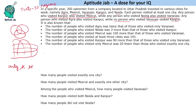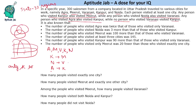Let us write the cities and conditions using initials: A (Agra), M (Meerut), V (Varanasi), K (Kanpur), N (Noida). The conditions are: visiting Kanpur requires visiting Meerut; visiting Noida requires visiting Varanasi; visiting Agra requires visiting Kanpur — so if a person visits Agra, they must also visit Kanpur and Meerut. The reverse is not true: visiting Meerut alone is possible. The last condition is Varanasi and Kanpur cannot be visited together.